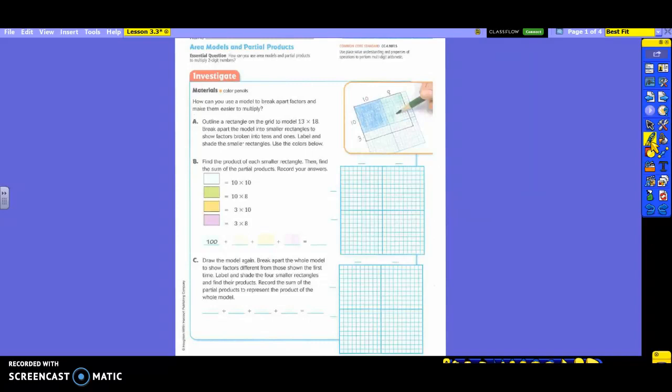So we're going to do one at a time so we do not forget anything. The first part said to outline a rectangle on the grid to model 13 times 18. So you're going to take your pencil to do the outlining and we are going to count 13 boxes going which direction? Down, and then we're going to count 18 going sideways or across.